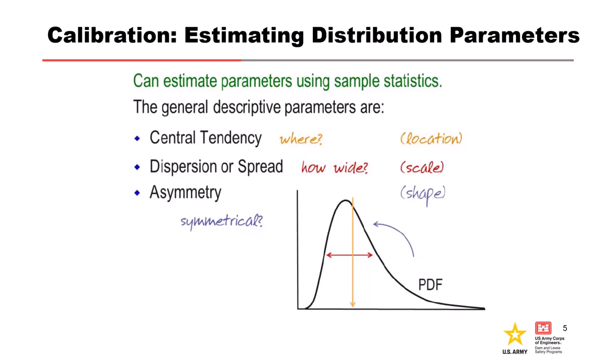These description parameters are also known as the moments of the probability distribution and can be described as the location, scale, and shape parameters. Note for the recommended log Pearson type 3 distribution, which is recommended for flow frequency analysis and many of you are familiar with, the location is the mean, the scale is the standard deviation, and the shape is the skew. And we'll discuss the LP3 distributions in more depth in later slides.